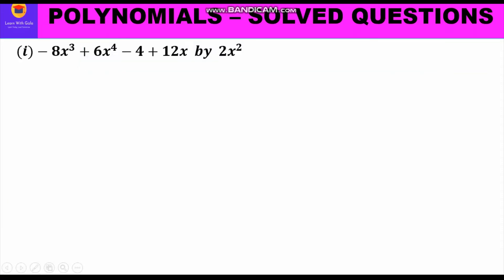Now let's start with the first question. It is: minus 8x³ plus 6x⁴ minus 4 plus 12x, to be divided by 2x². First of all, we shall write the polynomial in standard form — that is, each term written in decreasing order of the power — giving us: 6x⁴ minus 8x³ plus 12x minus 4.